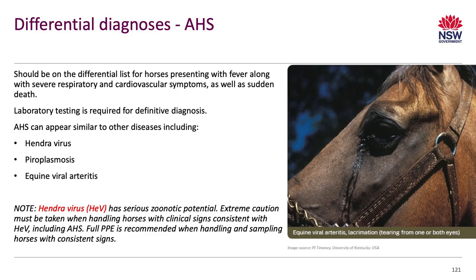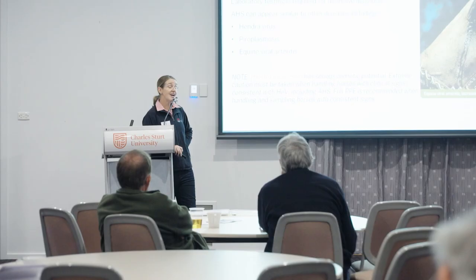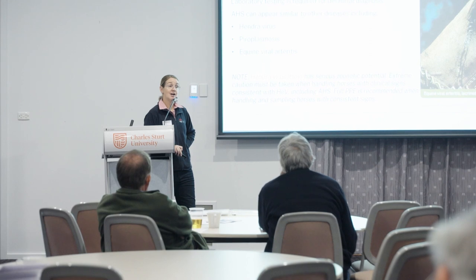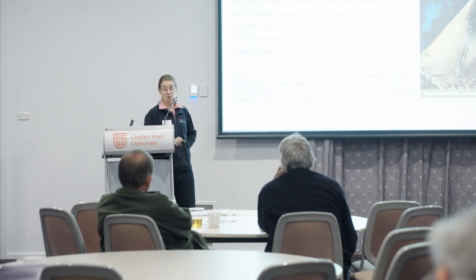There are a number of differential diagnoses to consider for African horse sickness. Hendra virus is probably the one we want to be most careful about from a zoonotic point of view, and the one we're really looking out for in this region. We haven't had any Hendra cases here, but it's always important to do exclusions. Please use the PPE kits you'll be receiving today if you're investigating a horse with these kinds of signs.